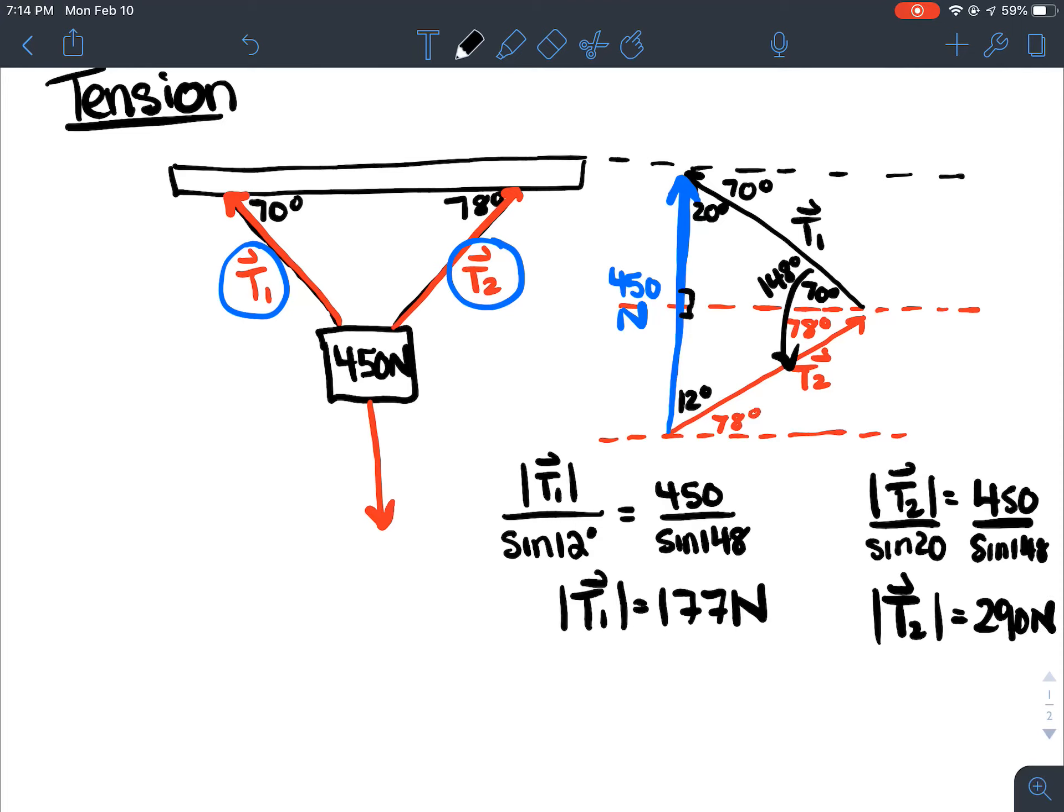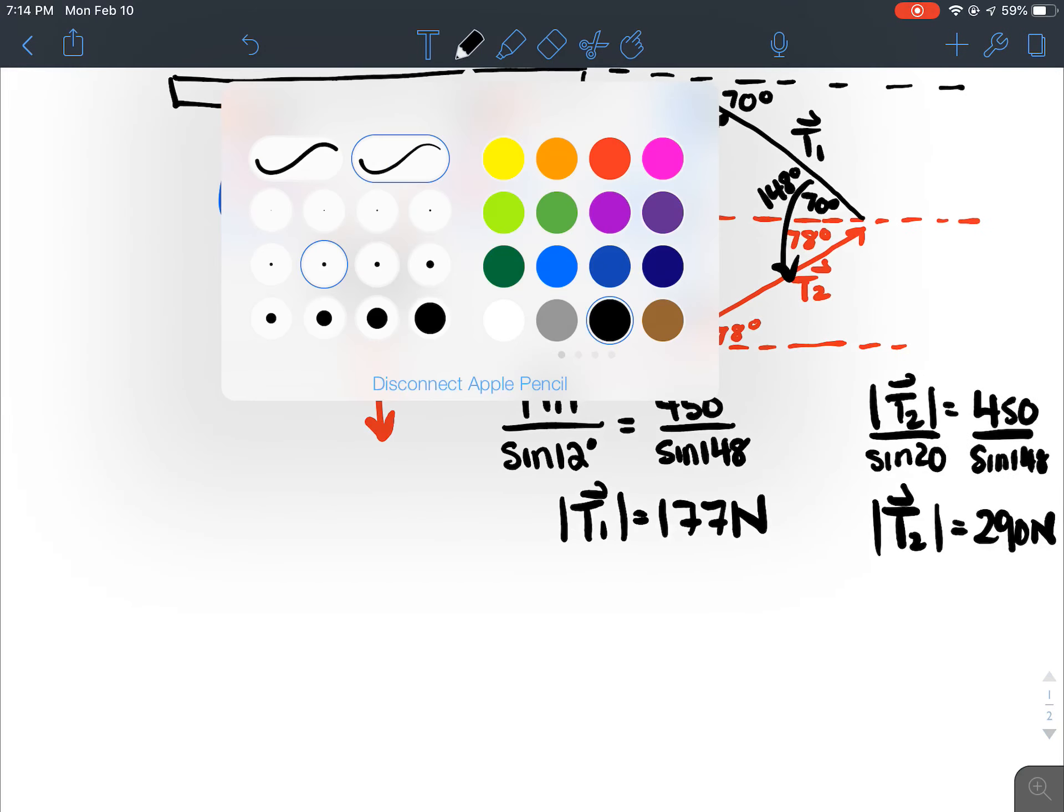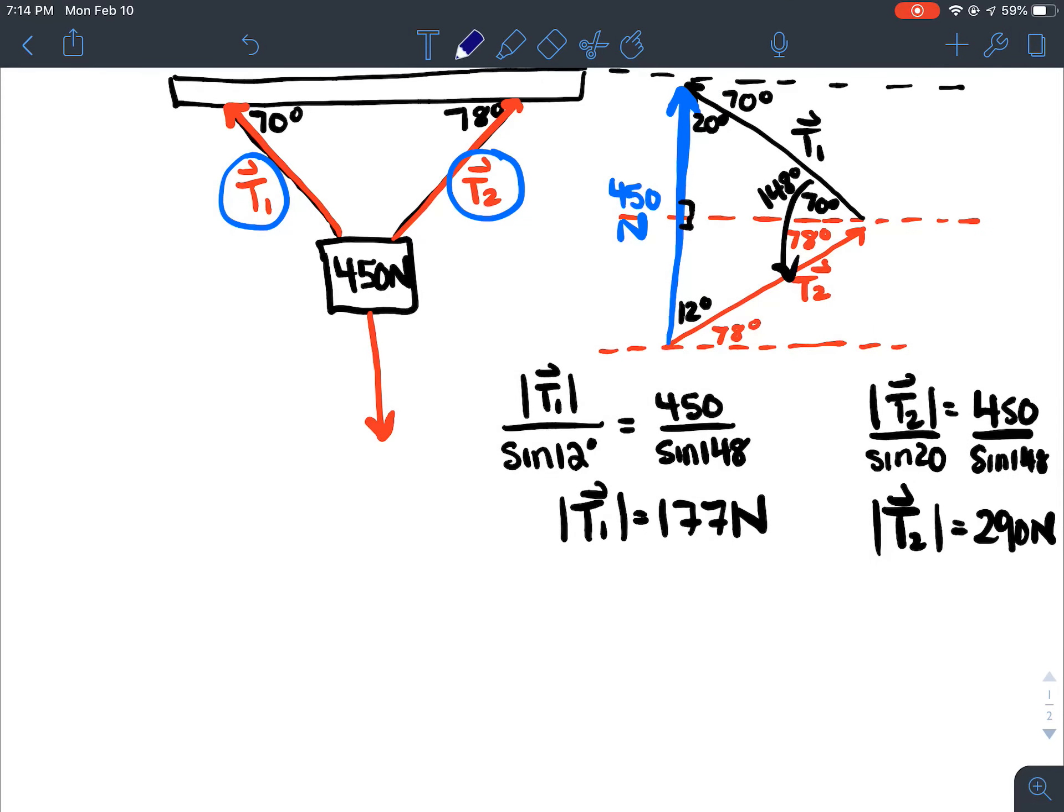Okay, so that's how you can find T1 and T2 pretty easily. I would say that's like a way easier method than using components. Because let's say you want to use components. Okay, so now you have tension at an angle of 78 degrees.